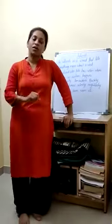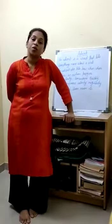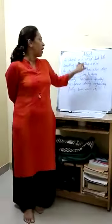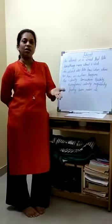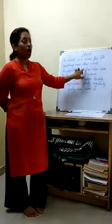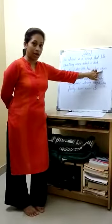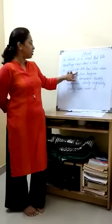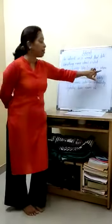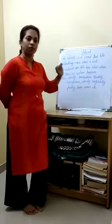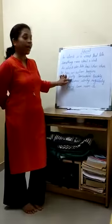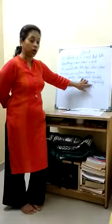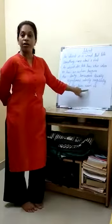We told in our sentence that I ate fruit salad in the morning. When I add something more about the verb, that is adverb. An adverb also tells us how, when, where, or how an action happens. For example: daily, somewhere, quickly, everywhere, calmly, regularly, freely, soon, near, etc.